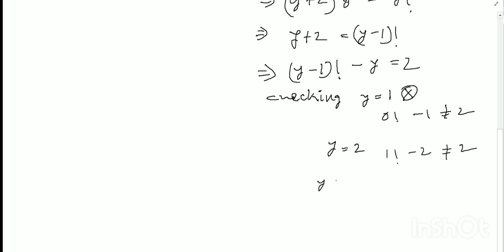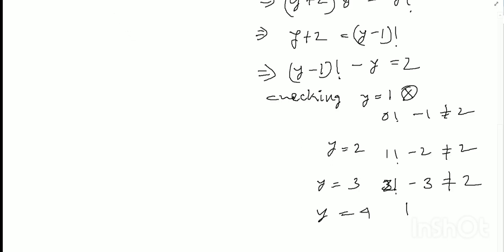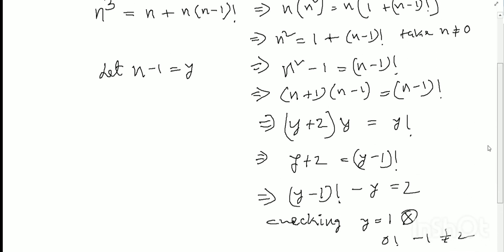Checking y equals 2: 2 factorial minus 3 does not equal 2. Again checking y equals 3: 2 factorial minus 3 does not equal 2. Checking y equals 4: 3 factorial minus 4 equals 6 minus 4 equals 2. So y equals 4 is the solution.